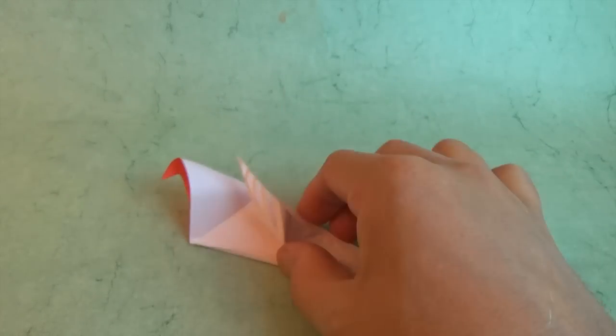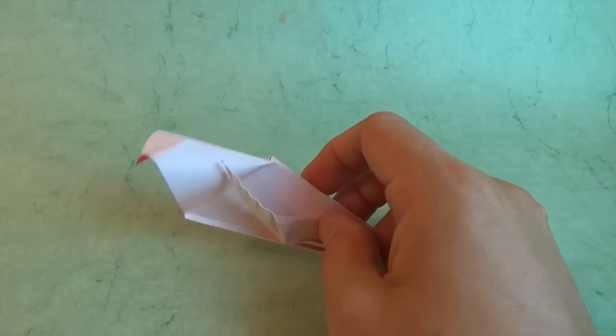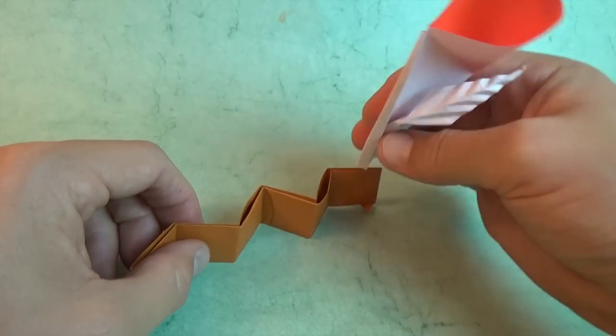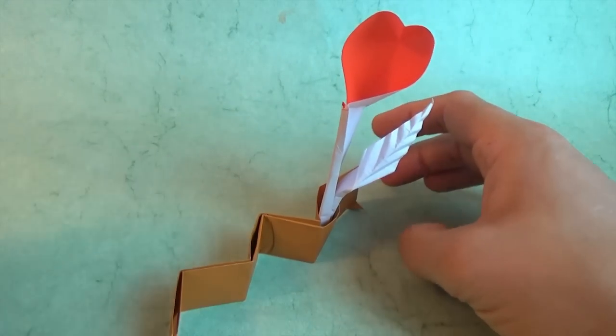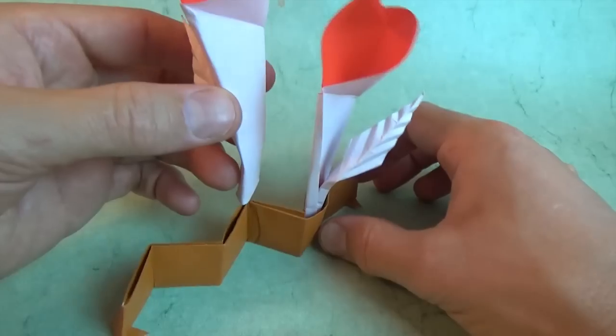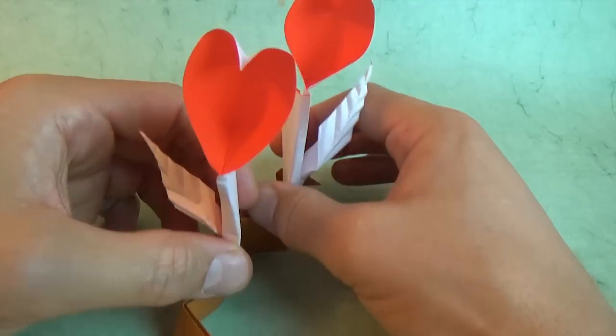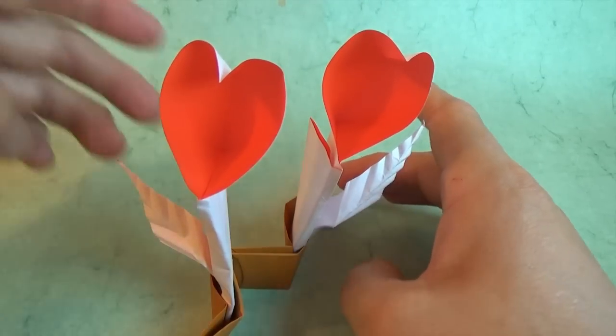And this model doesn't really stand, but if you'd like it to stand, you can fold earth and you can plant it into the earth like that. And you can even plant a few flowers, or at least a couple. So now you have the beginnings of a heart flower garden.